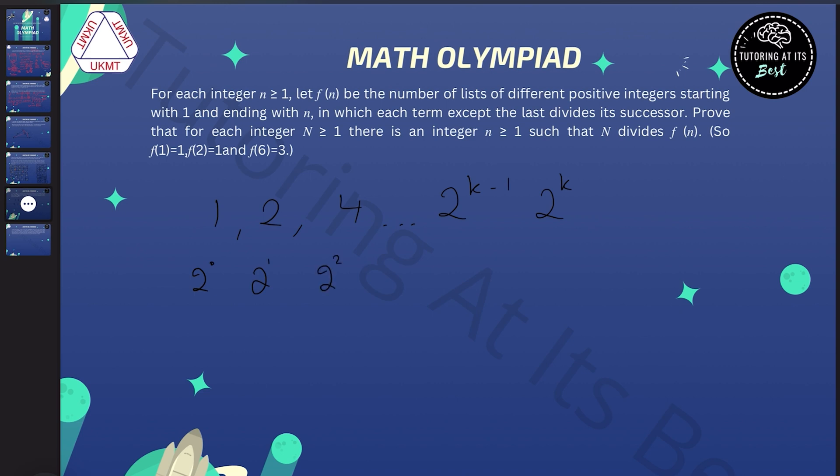Now what we're asked to count is the number of lists of factors where every term divides the one after it. So the rules say that I've got to start with one, but I've also got to finish with 2 to the k itself, but I can choose or not to choose to have any of the terms in between. So I could choose to have two, I could choose not to have four, I could have some ones in the middle, and then I could choose to have 2 to the k minus one. Now this is easy to count because I've got k minus one independent choices.